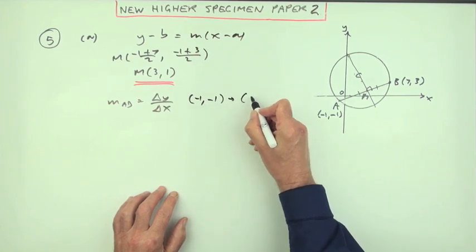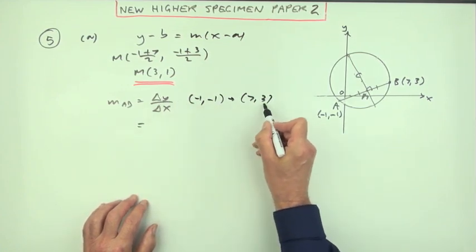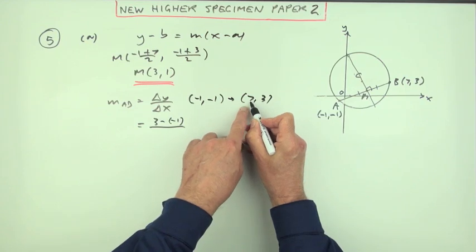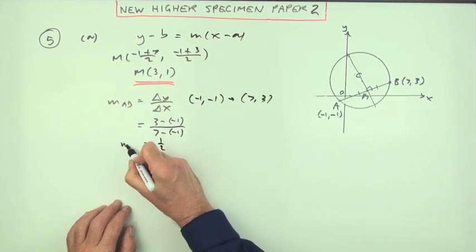Even though I've got them here, I'll just put it down. I'm going from the point (-1, -1) to the point (7, 3). So the difference in the y's will be y2 take away y1: 3 take away -1, over x2 minus x1: 7 take away -1. Four over eight, that's a half.